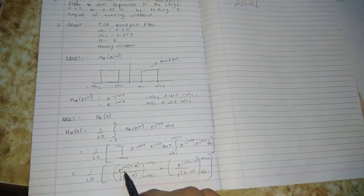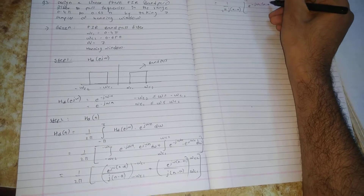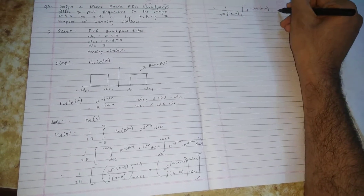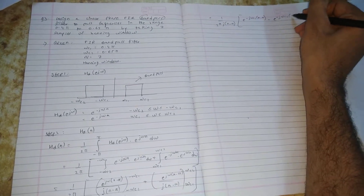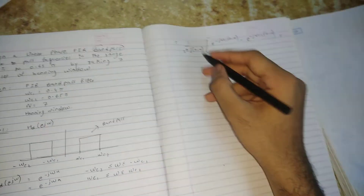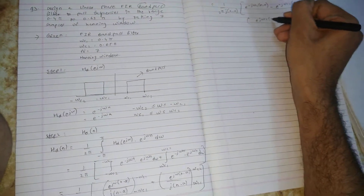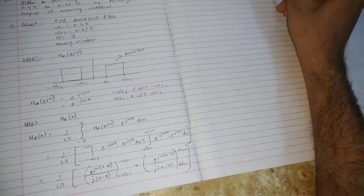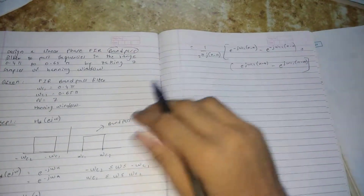Substituting the limits gives: e^(−jωc1(n−α)) minus e^(−jωc2(n−α)) for the first bracket, plus for the second bracket: e^(jωc2(n−α)) minus e^(jωc1(n−α)). Now we have completed the limit substitution equations.